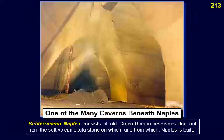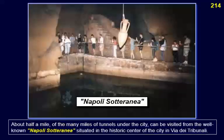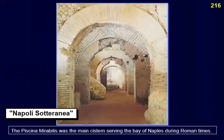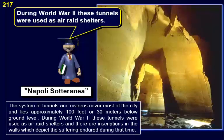Subterranean Naples consists of old Greco-Roman reservoirs dug out from the soft volcanic tufa stone on which the city is built. About half a mile of the many miles of tunnels under the city can be visited from the well-known Napoli Sotterranea, situated in the historic center. The Piscina Mirabilis was the main cistern serving the Bay of Naples during Roman times. The system of tunnels and cisterns covers most of the city and lies approximately 100 feet or 30 meters below ground level. During World War II, these tunnels were used as air raid shelters.